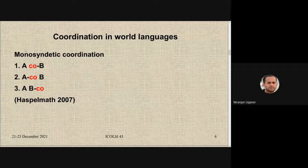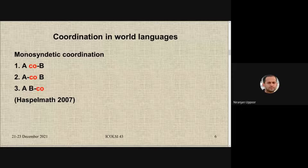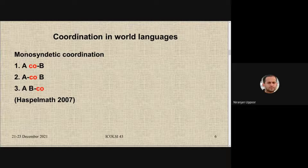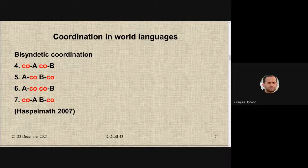Under synthetic variety we have two types: monosynthetic and bisynthetic. Monosynthetic is an instance where we have only one coordinator conjoining two constituents, and the coordinator may either sit with the second coordinate or with the first. In monosynthetic coordination there are three patterns attested in world languages. In bisynthetic coordination we get four patterns, wherein we have a coordinator going with each coordinate.